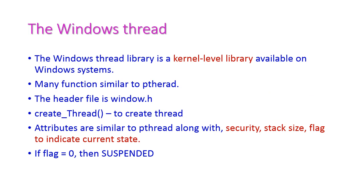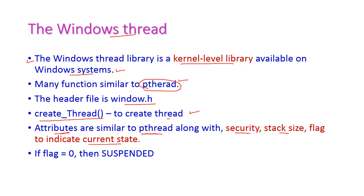The Windows thread (Win32 thread) library is a kernel-level library available only on the Windows operating system. Its main functions are similar to pthread — the syntax is almost the same. The header file is windows.h, and the CreateThread function is used to create the thread. In addition to the attributes similar to pthread, Win32 also includes security, stack size, and a flag parameter. The flag indicates the current state of the thread; if the flag value is 0, the thread is suspended.